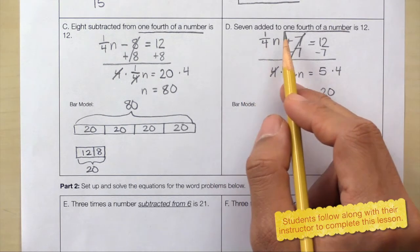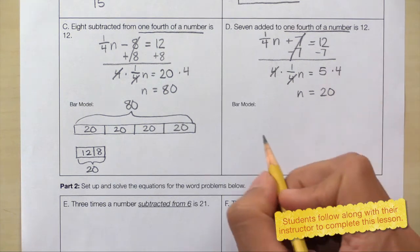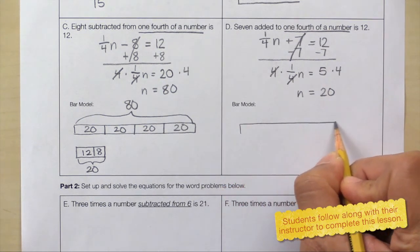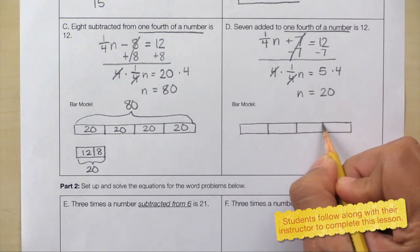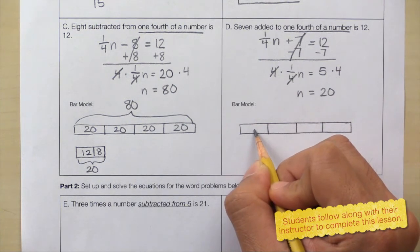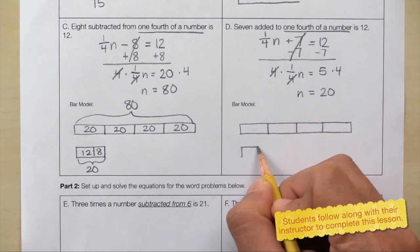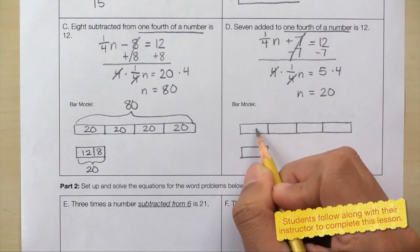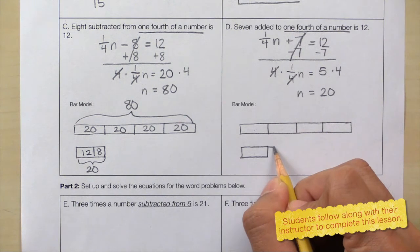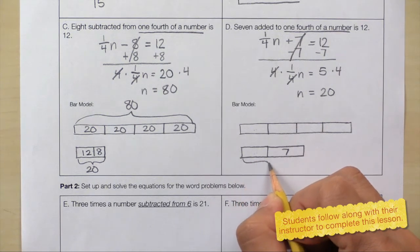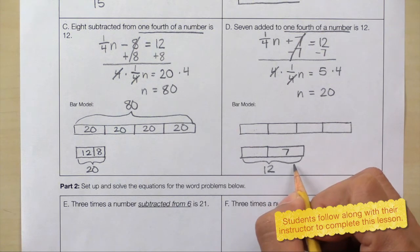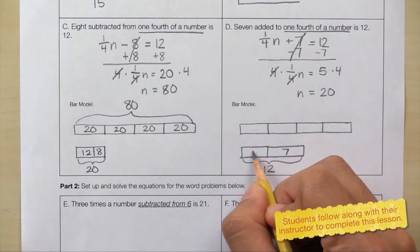Let's draw a bar model to check our work. 7 added to 1 fourth of a number is 12. So here is a number. And here is 1 fourth of a number. I'll draw another bar model down here — again, this is 1 fourth of a number. Now, 7 added to 1 fourth of a number equals 12. If this whole thing is 12 and this part is 7, I know that this part is 5.